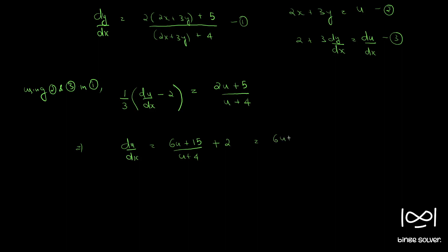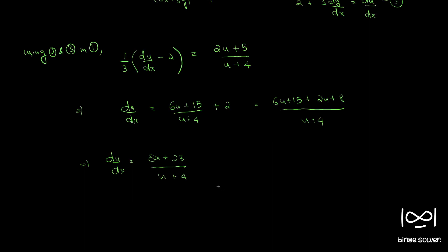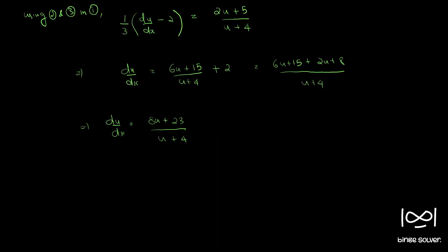This simplifies to du/dx = (8u + 23) / (u + 4). Separating variables, (u + 4) / (8u + 23) du = dx.